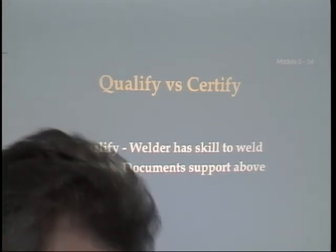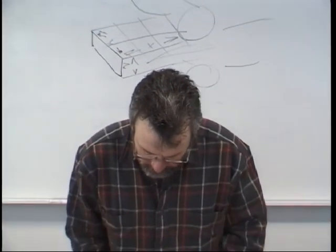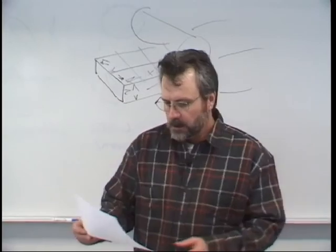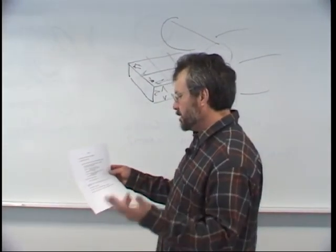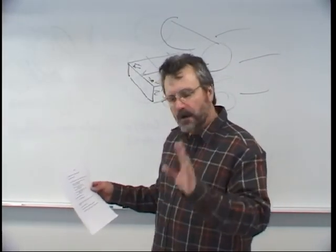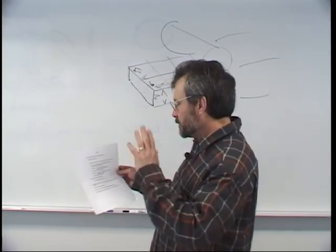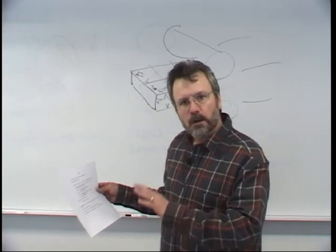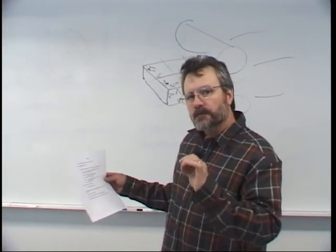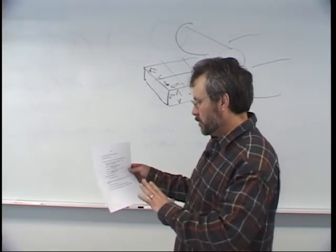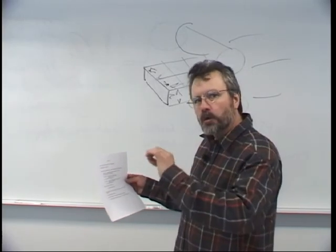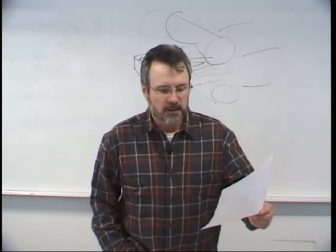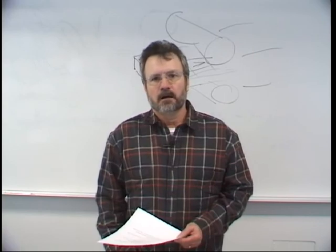In your student packet you'll find copies of PQRs, WPSs, and WPQRs with directions. I want you to follow the directions and enter the information into the PQR form. Then take the information off the PQR form and write a WPS (welding procedure specification). Finally, take the information off the WPS and fill out some WPQR forms — so you'll have experience filling out all three types of forms. There is also a module 5 part 2 take-home practice quiz covering PQRs, WPSs, and WPQRs with about 17 questions typical of the module exam.